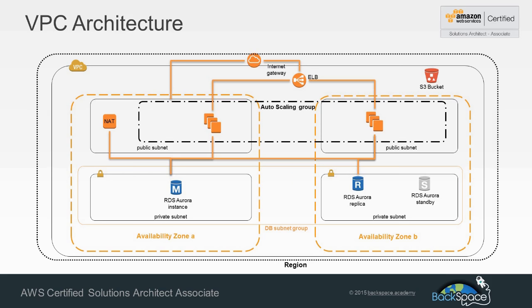We're going to start off by creating a VPC in a single availability zone with private and public subnets. We're then going to expand that to a second availability zone and create a DB subnet group. Within that private subnet we will create an RDS Aurora cluster across multi-AZ. We're going to have an RDS Aurora standby instance and also create an RDS Aurora replica to take the read load off our RDS master database.